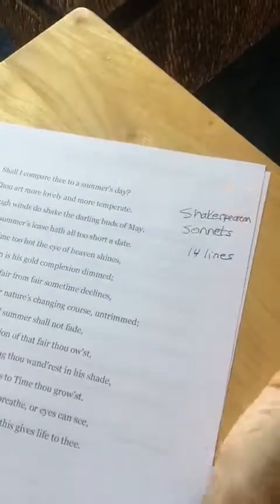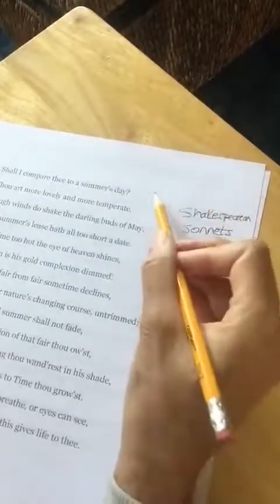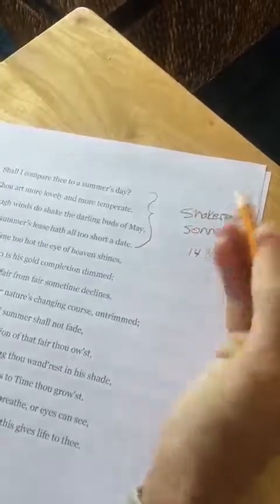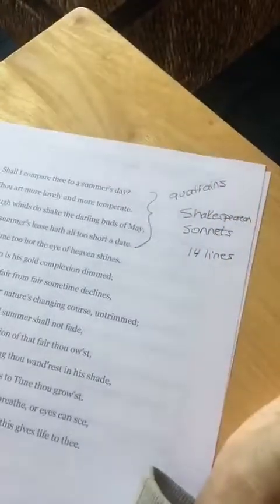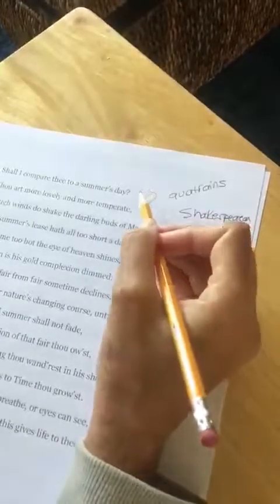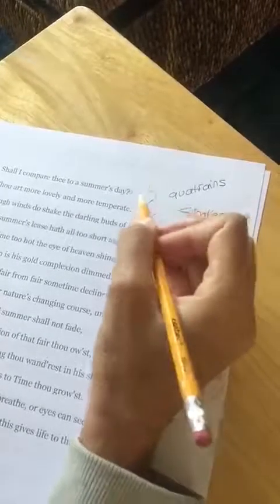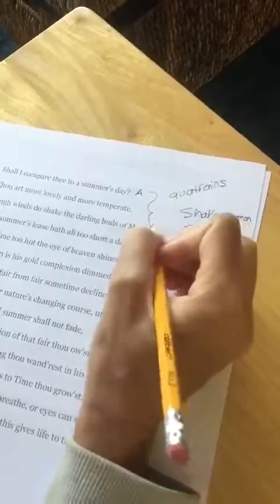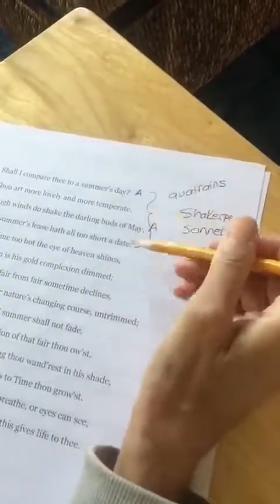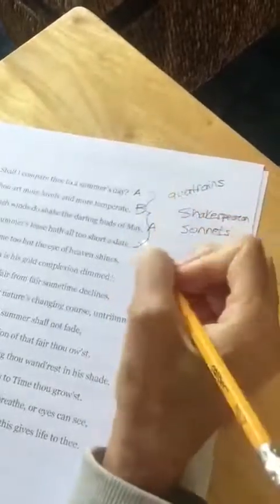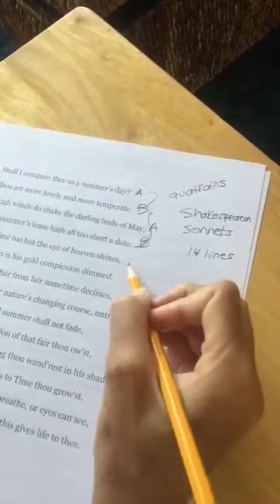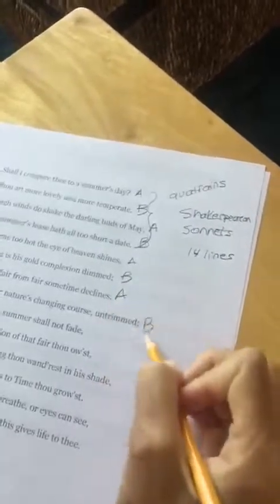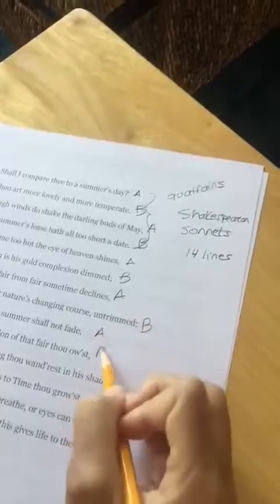And in a Shakespearean sonnet, they usually are structured into what are called quatrains, which are just four lines that are united usually by a rhyme scheme. So for example, in Shakespearean sonnets, the first and third lines rhyme and the second and fourth. So ABAB. And then the same thing happens in the second quatrain. ABAB. And then ABAB.